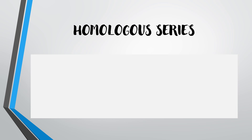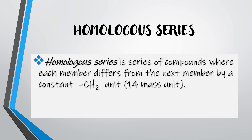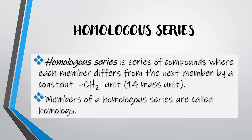Now we look at the homologous series. A homologous series is a series of compounds where each member differs from the next by a constant CH2 unit, which has a mass of 14 mass units. Members of a homologous series are called homologs.